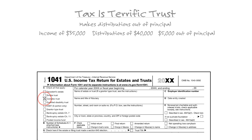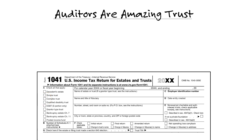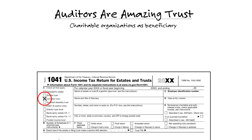In our third scenario, the Auditors Are Amazing Trust is a complex trust because it has charitable organizations as the beneficiary, violating a requirement of a simple trust. Notice it's giving away things to charity.